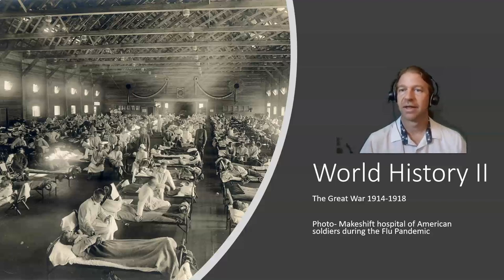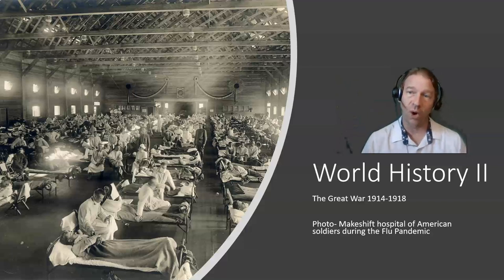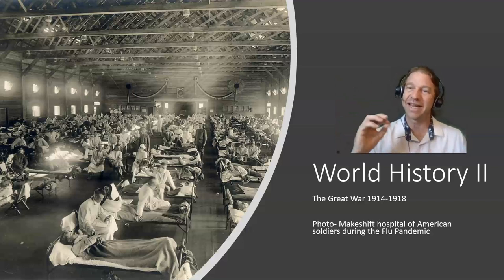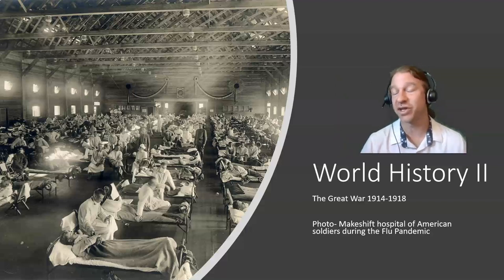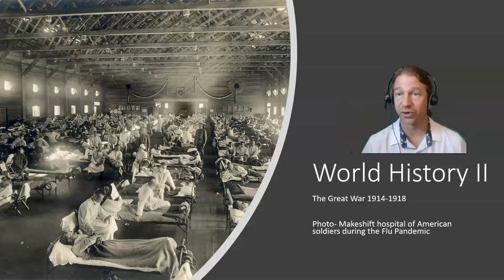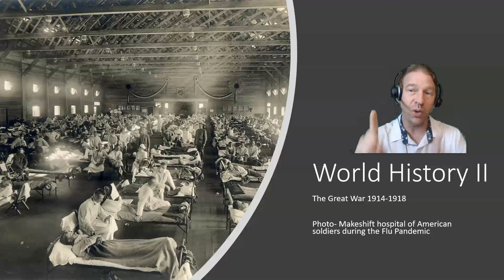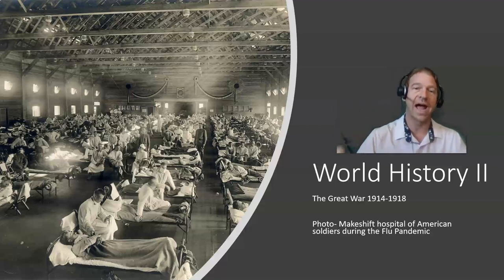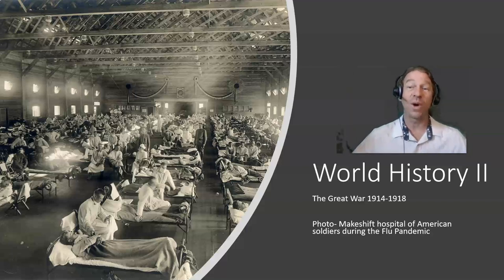World history is about studying change in the world drawn largely from global connections. So world history looks at the globe of human populations, and it's particularly interested in how interactions and interconnections between different societies, different places, and different people shape world historical change. So I want you to locate within the subject matter of this course an example of change and write a paper about how interconnections created lasting change.